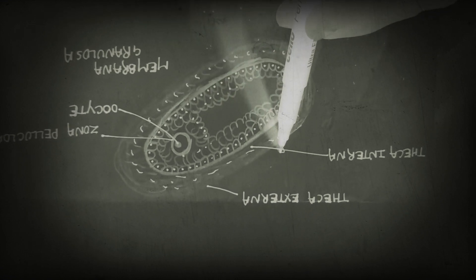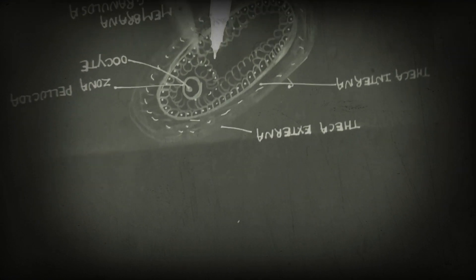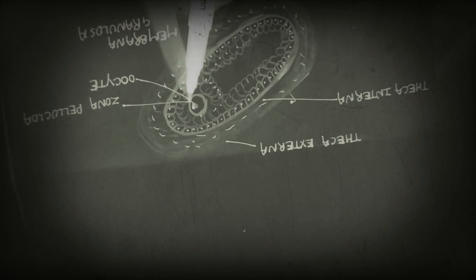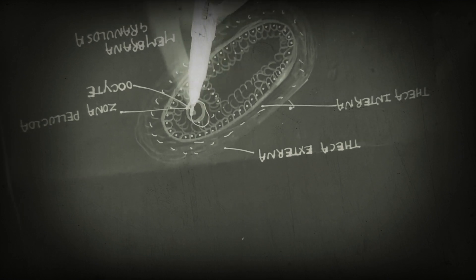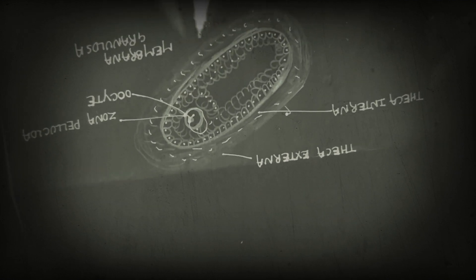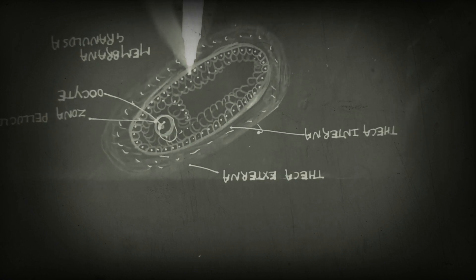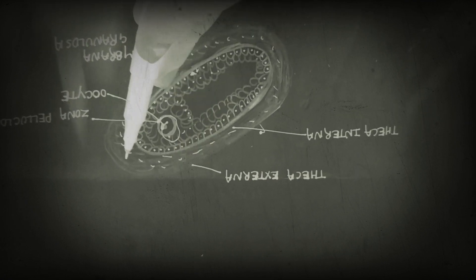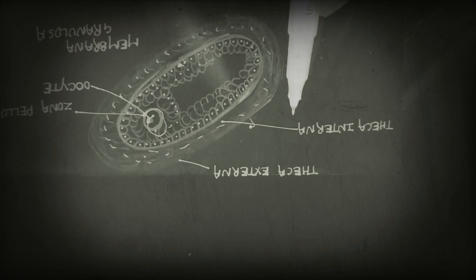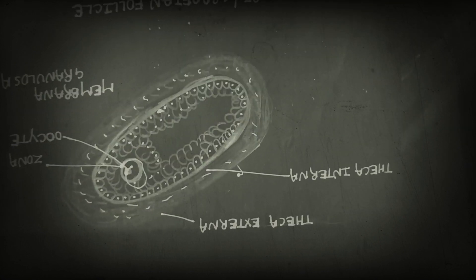The internal structure includes the oocyte, zona pellucida which is a membrane, and the granulosa membrane. The outer structure and outer covering consists of the theca interna and theca externa.